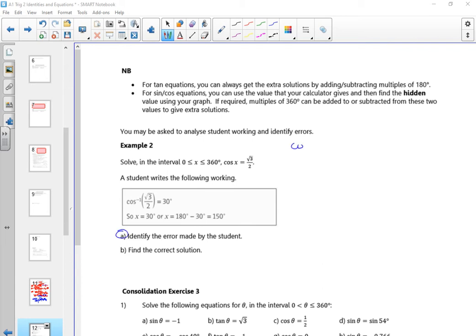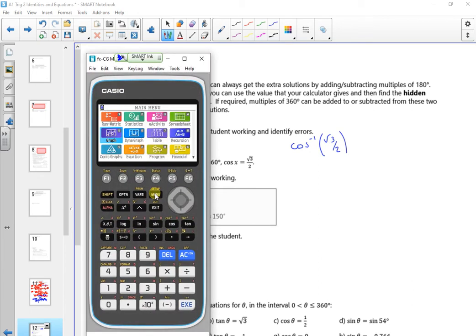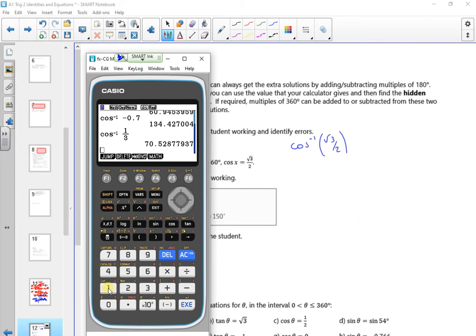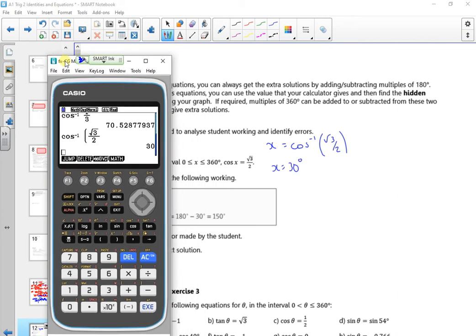So I'm going to do cos to the minus 1 of root 3 over 2. So let's have a look at that on the calculator. Because on the papers you'll find there's a question that asks you to find where the issues are. So root 3, so find the errors, or fill in the missing spots. So that's x. So x is 30 degrees, so that's nice. Right, I'm doing it between 0 and 360.